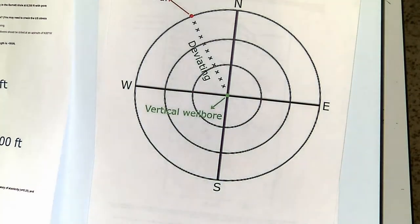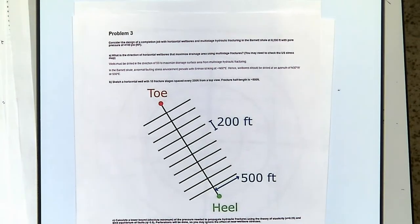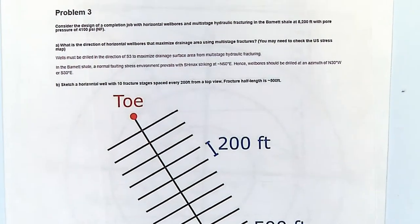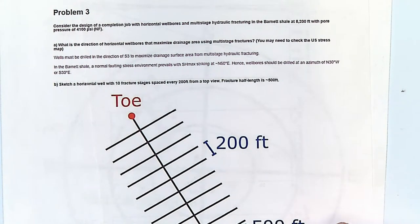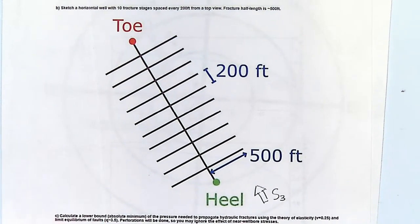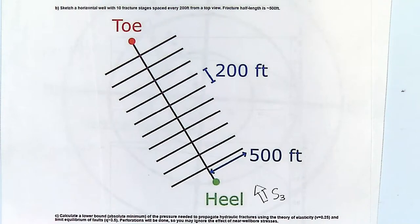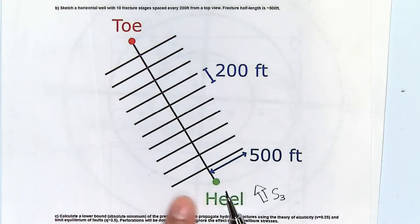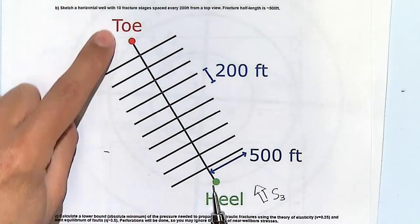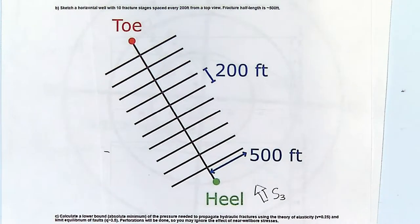Problem number three is a design problem. You know the stress conditions and in which direction you have the minimum principal stress. According to that, you place the lateral and the hydraulic fractures. In this case the spacing between stages and the length of the fractures are given, and from those you determine the number of fractures and the length of the lateral.